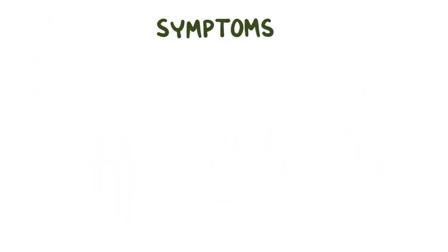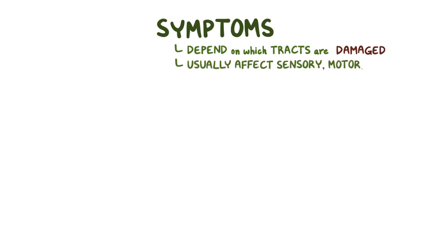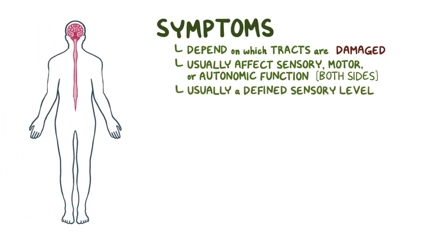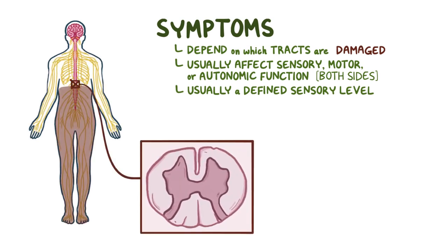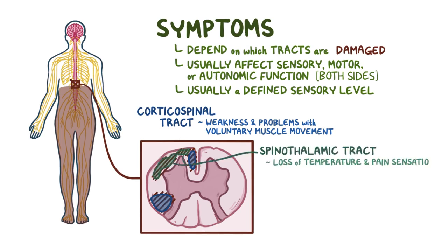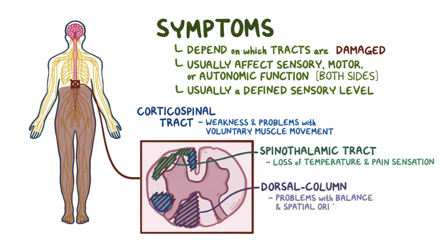Symptoms of transverse myelitis depend on which tracts are damaged and usually affect sensory, motor, or autonomic function on both sides of the body. There is usually a well-defined sensory level, meaning symptoms only affect the body below a certain level of the spinal cord. Damage to the corticospinal tract causes weakness and problems with voluntary muscle movement below that level. Damage to the spinothalamic tract causes a loss of temperature and pain sensation, and damage to the dorsal column pathways causes problems with balance and spatial orientation.